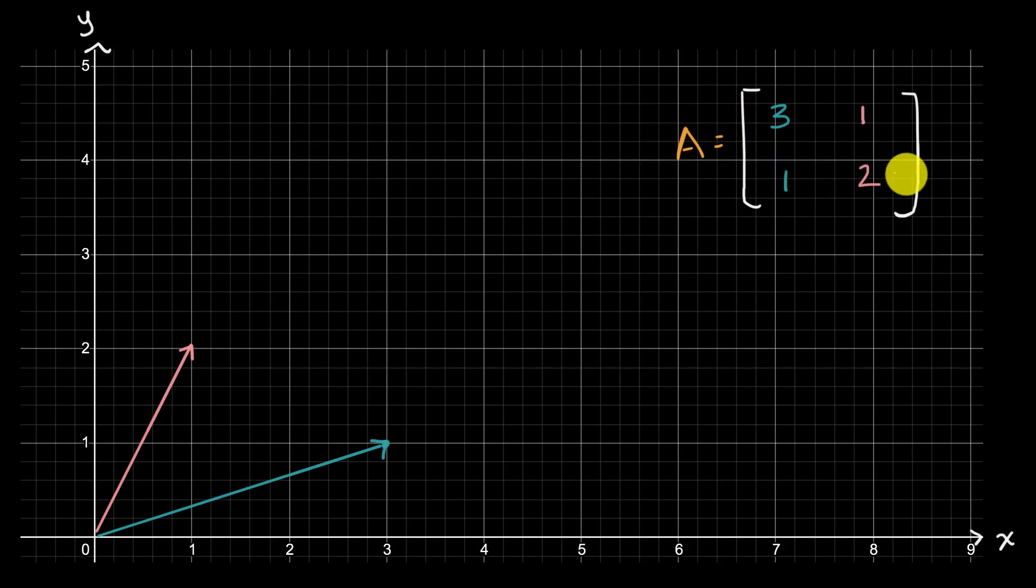So I have a two by two matrix here, and we could view it as having two column vectors. The first column can define this vector three, one, which I've depicted in blue here.